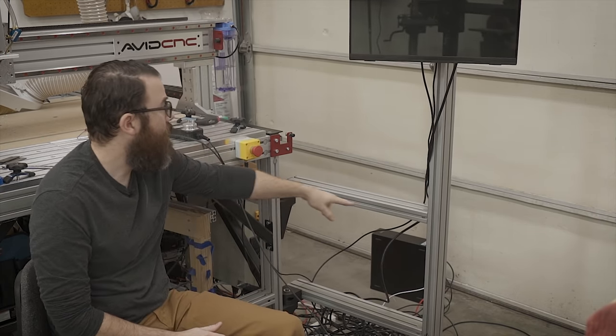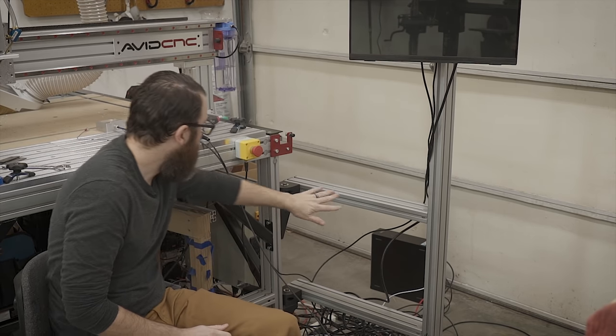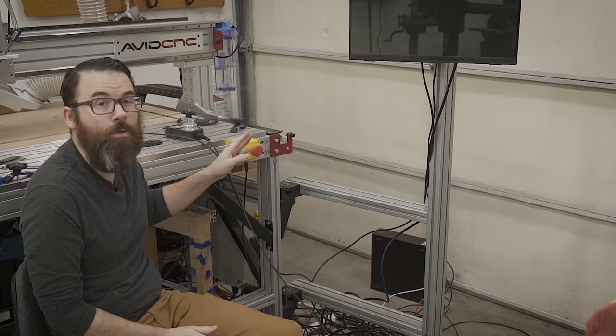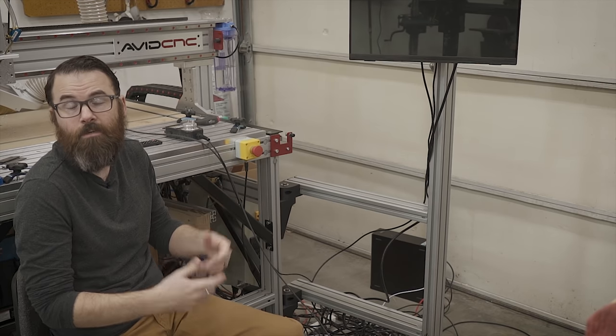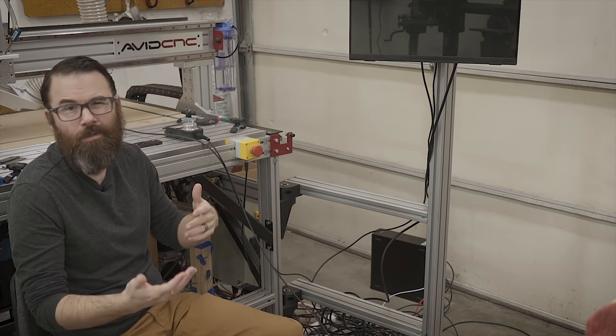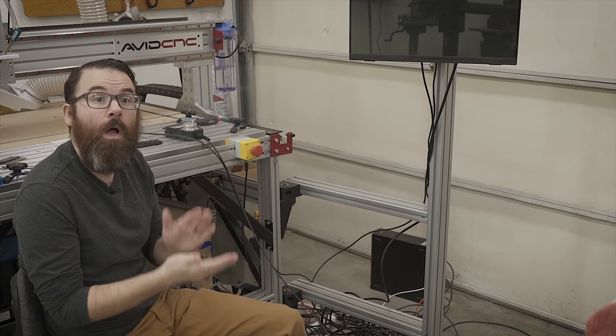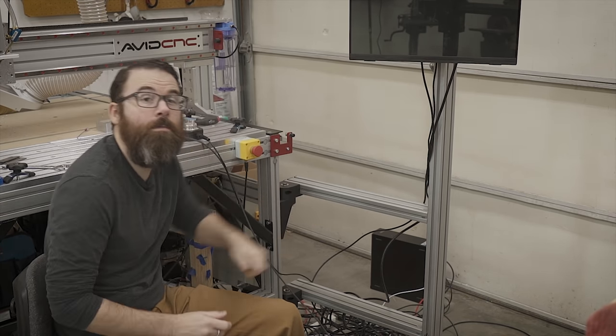The whole thing is generally constructed out of the 80-20 extrusions that are used on the machine itself. So this is the 40 by 80 millimeter profile. The hinges themselves are 3D printed. So that's pretty much all there is to it. This can be mounted to either side of the machine. The wires might need to be a different length or run in a different configuration depending on where you have it. Let's take a look at the hinge mechanisms first.